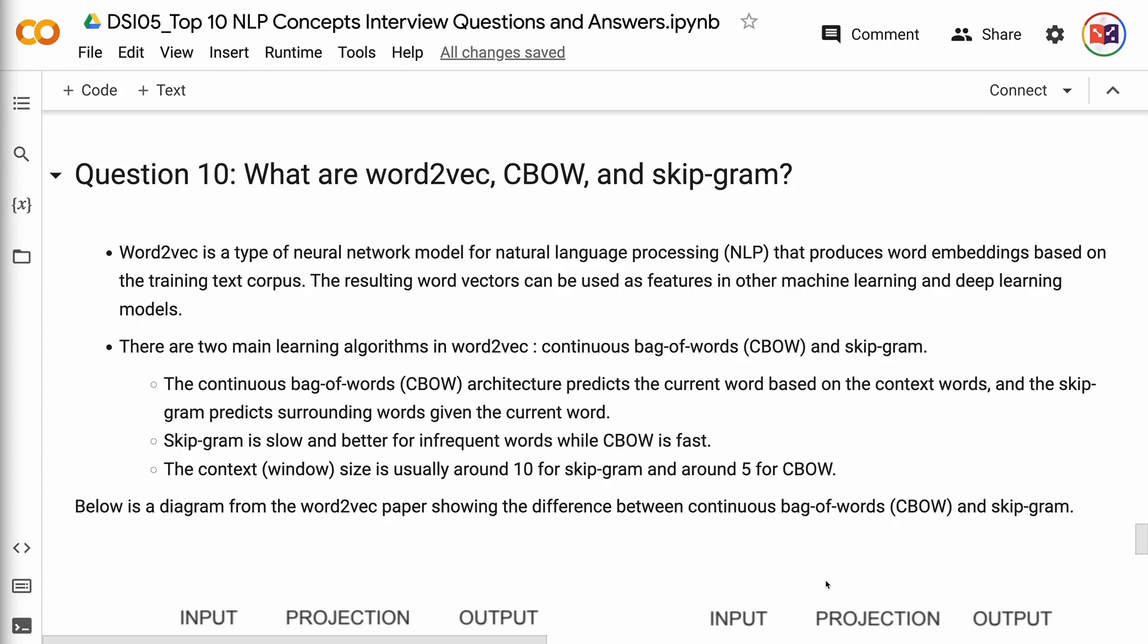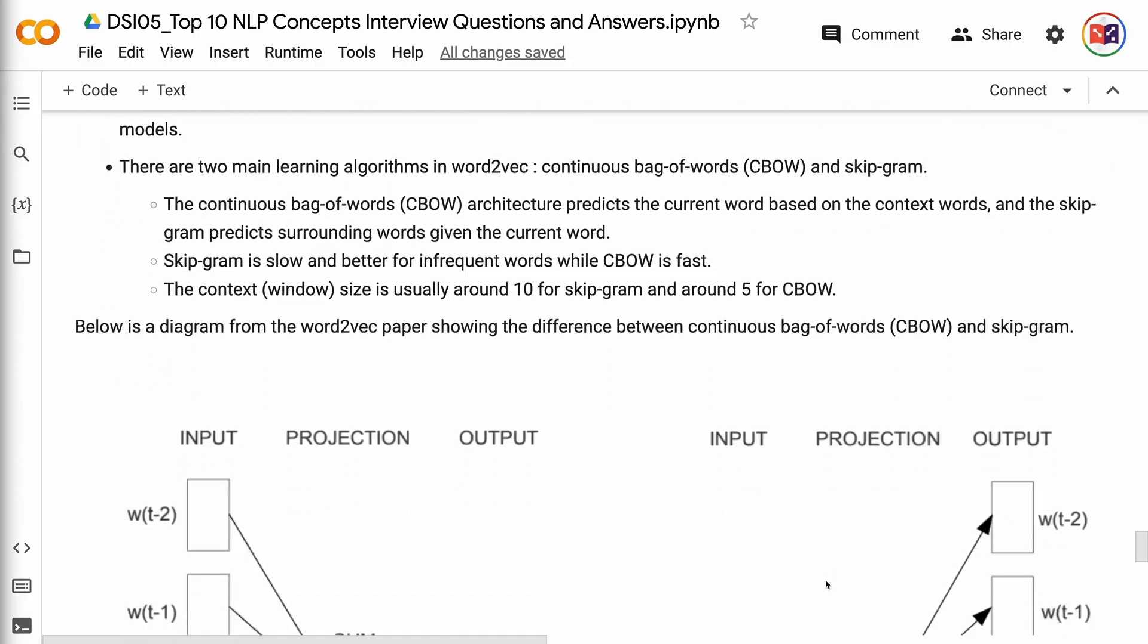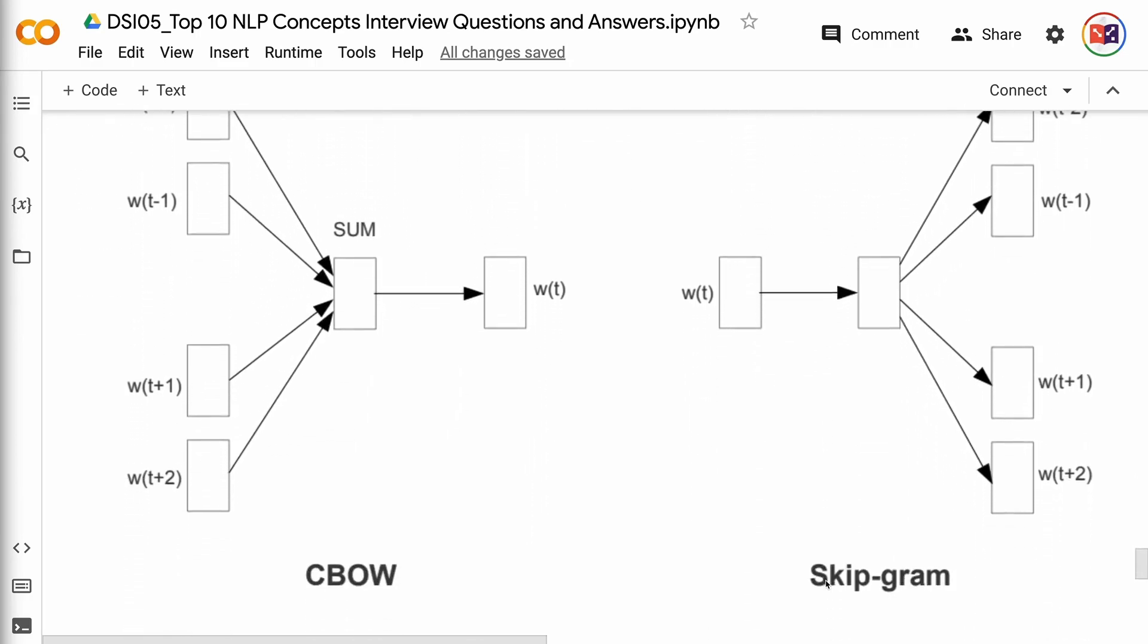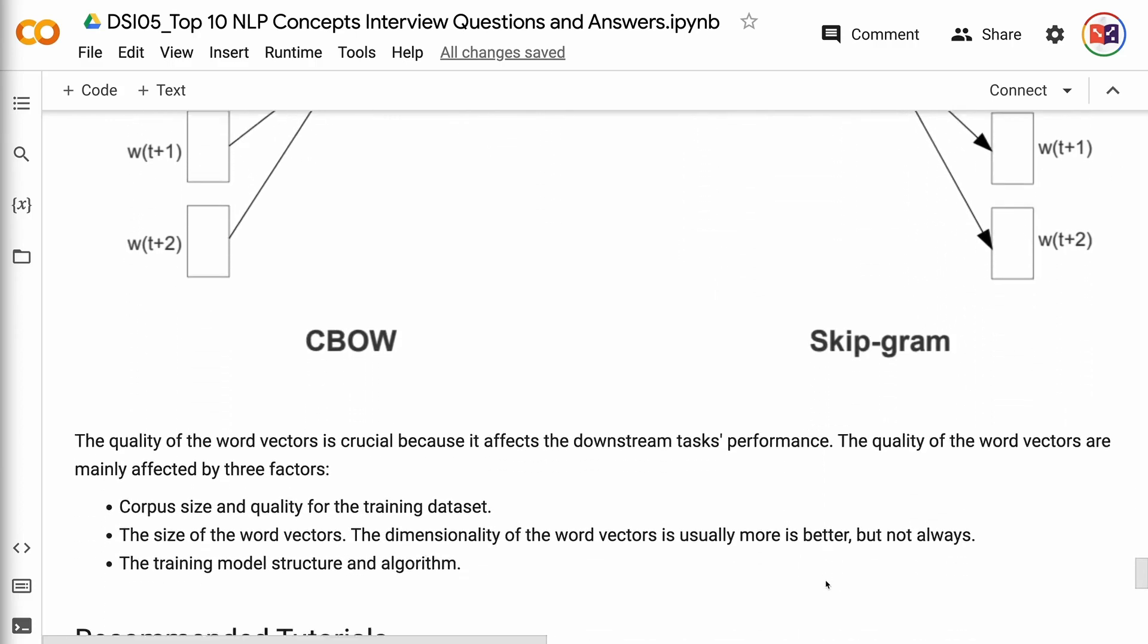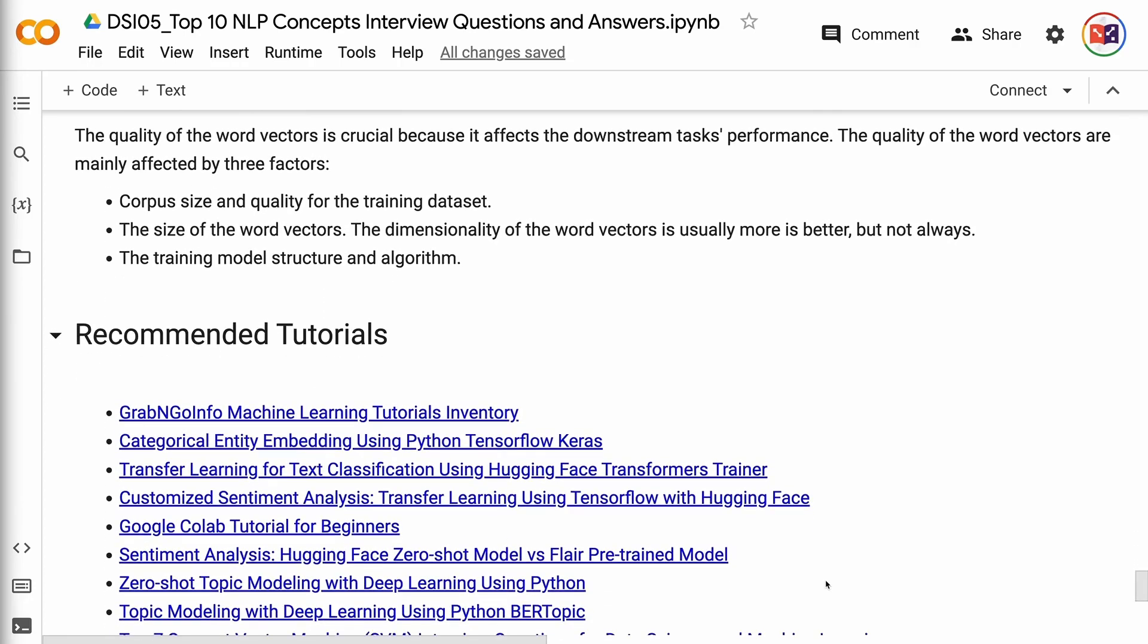Skipgram is slow and better for infrequent words while CBoW is fast. The context size is usually around 10 for Skipgram and around 5 for CBoW. Below is a diagram from the Word2Vec paper showing the difference between continuous bag of words and Skipgram. The quality of the word vectors is crucial because it affects the downstream task's performance. The quality of the word vectors are mainly affected by three factors: corpus size and quality for the training dataset, the size of the word vectors, the dimensionality of the word vectors is usually more is better but not always, and the training model structure and algorithm.